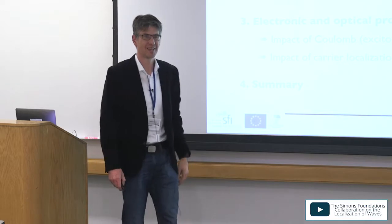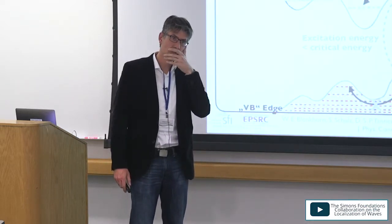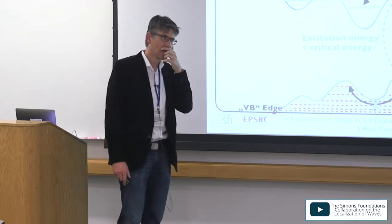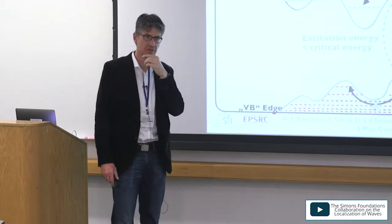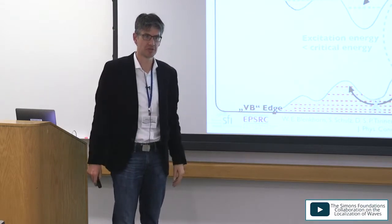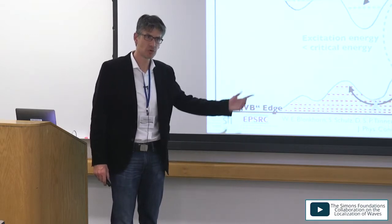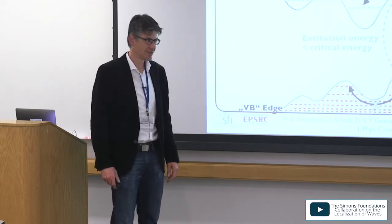Regarding the density of states for electrons and holes: with 175 configurations, we could bin them again and look at the density of states, and we could produce that from the existing calculations.